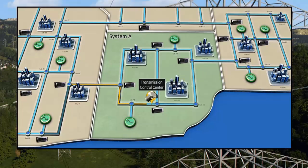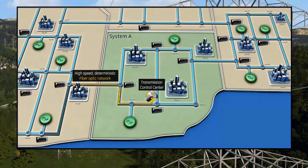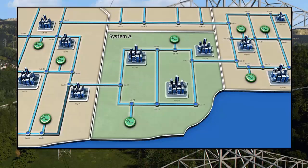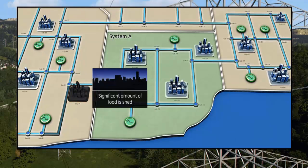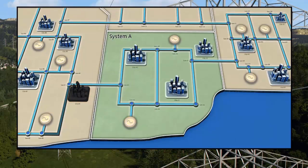Once the L90 isolates the faulted section, it immediately sends fault records to the transmission control center via a high-speed deterministic fiber-optic network utilizing a GE multiplexer. Immediately following the trip and the loss in transmission capacity, the power system sheds a considerable amount of load and begins to experience the same power swings.